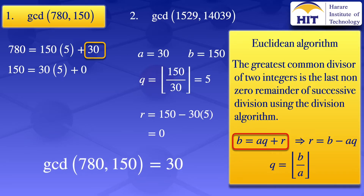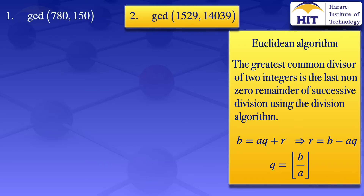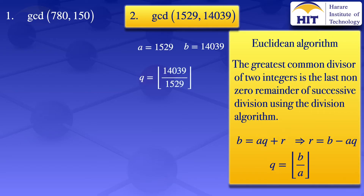That's the greatest common divisor of those two numbers. I will now move on to question number two: the greatest common divisor of 1529 and 14,039. As highlighted earlier, we take the larger number to be B and the smaller number to be A. So our A is 1529 and our B is 14,039, and Q is the floor value of 14,039 divided by 1529, which gives us 9.